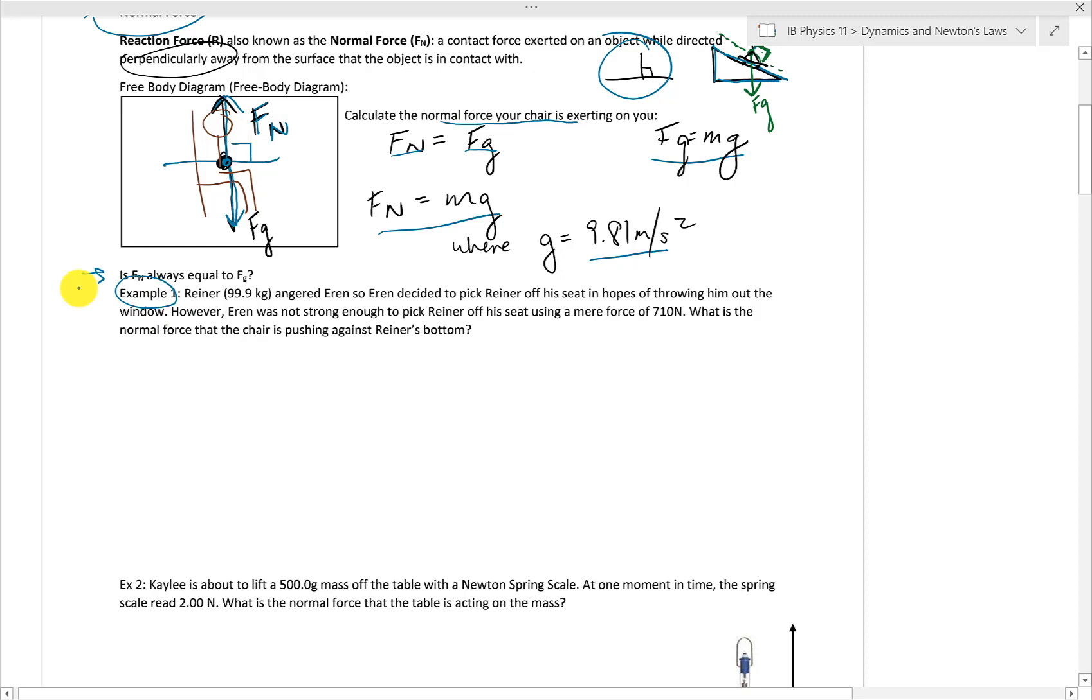You have Reiner, almost 100 kilograms. Anger Aaron, so Aaron decided to pick Reiner off his seat. Okay, so Reiner's getting lifted off his seat. He will be thrown out the window, but Aaron is not strong enough to pick him up. I guess he's kind of heavy. He only uses a force of 710 newtons to lift him up. What is the normal force that the chair is pushing against Reiner's bottom? So, it seems like the object of interest here is Reiner. So, let's draw Reiner on a chair.